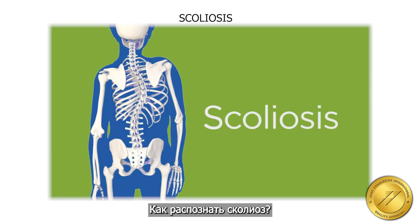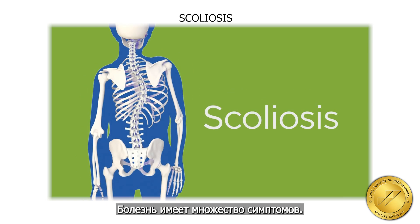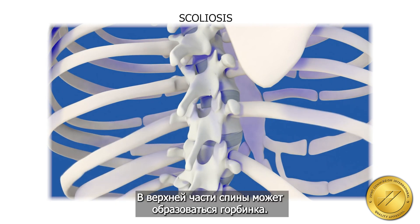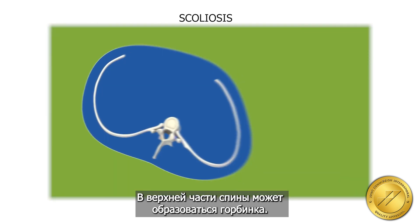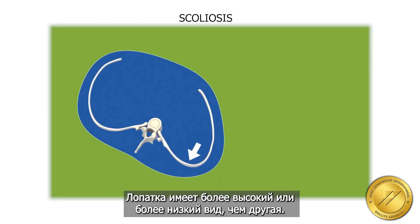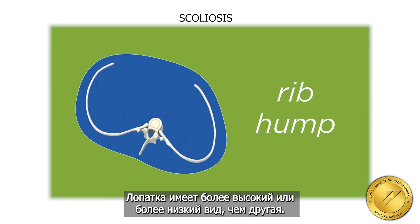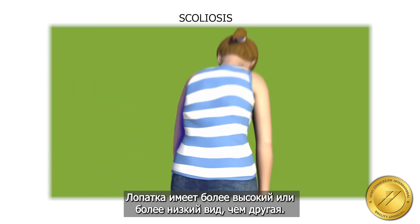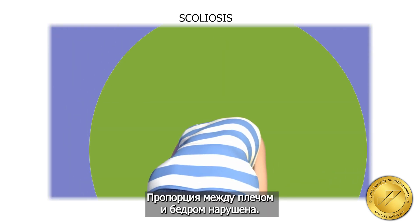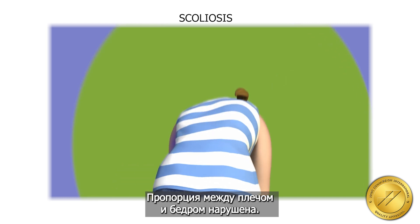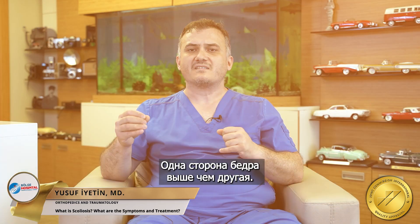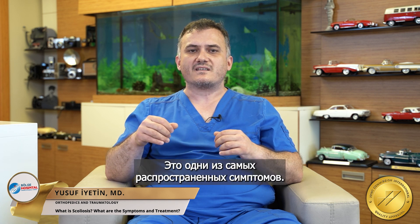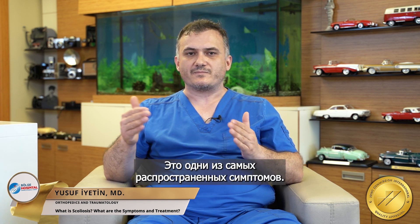The disease has many symptoms. A hump may occur on the upper back. The scapula may appear higher or lower than the other. The proportion between the shoulders and the hip are disturbed. One side of the hip is high and the other side is low. All these are among the most common symptoms.